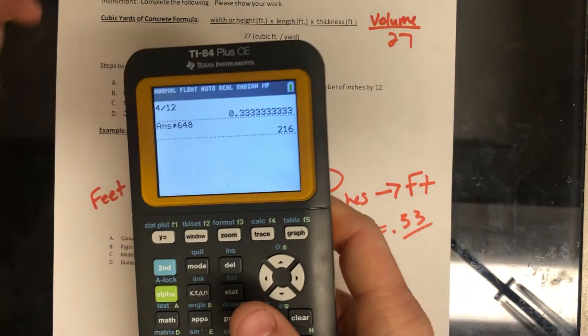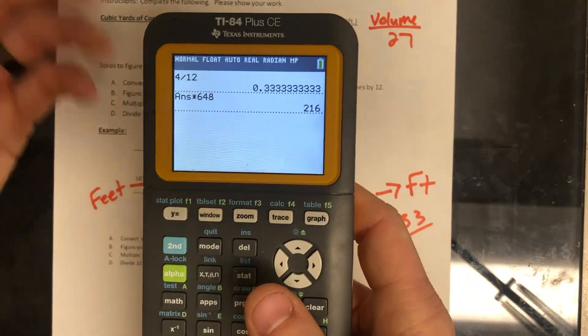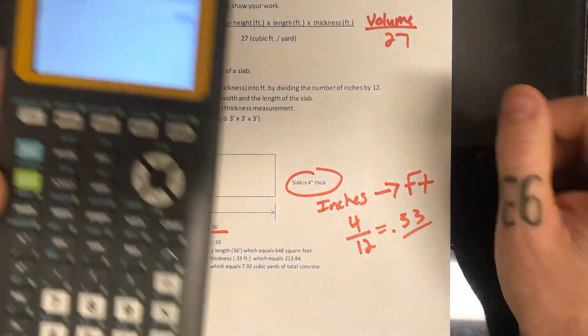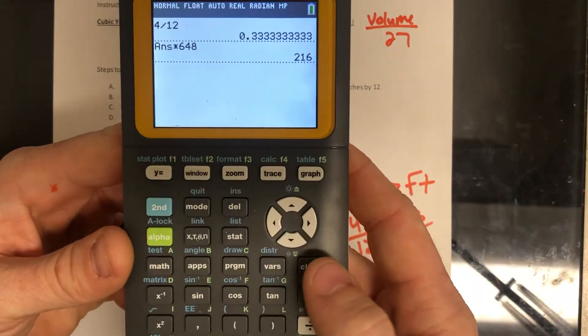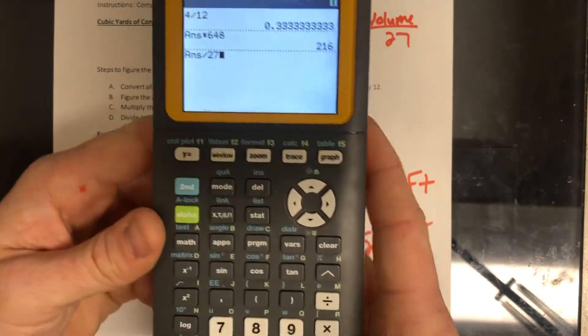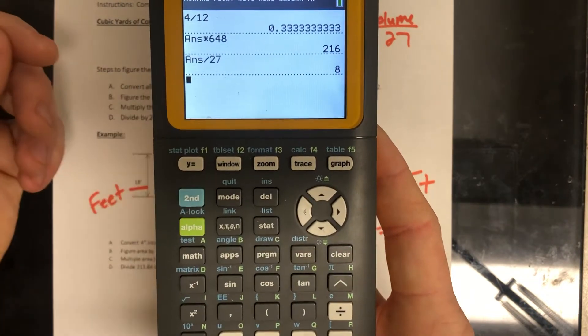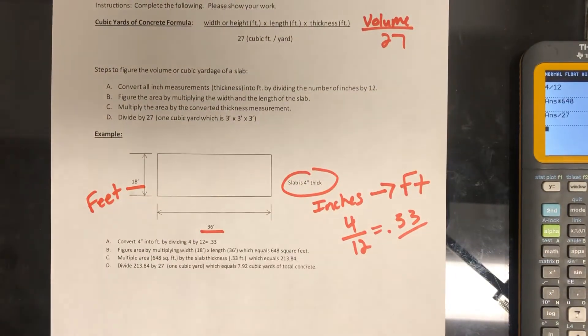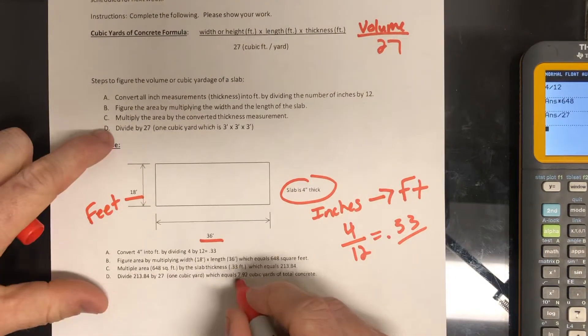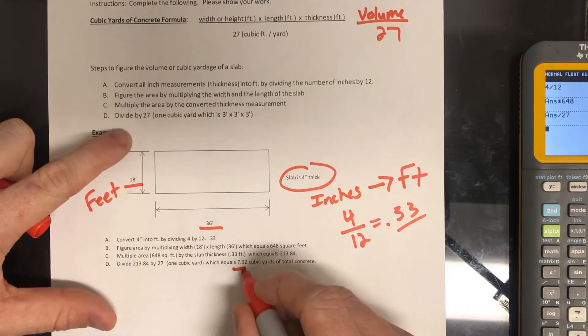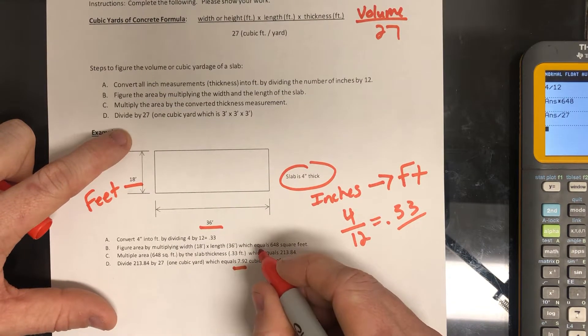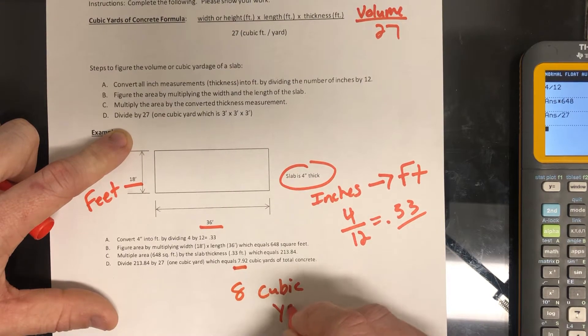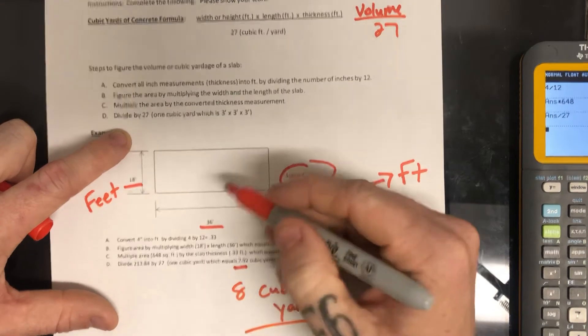All right, so once you get this, this is going to be the volume of the slab, but we need to divide by 27 according to our formula to get this in cubic yards. So 216 divided by 27 is going to give us eight cubic yards. So this particular slab is going to be eight cubic yards, which you can see this is 7.92. They rounded a little bit short.